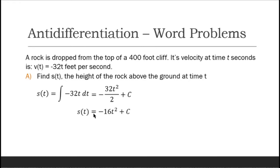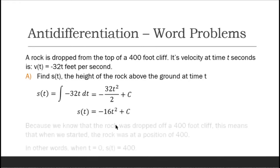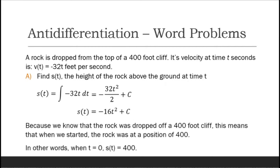This simplifies to s(t) = -16t² + c. Because we know that the rock was dropped from a 400-foot cliff, this means that when we started, the rock was at a position of 400 feet.